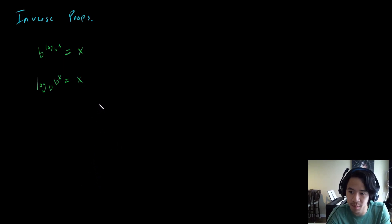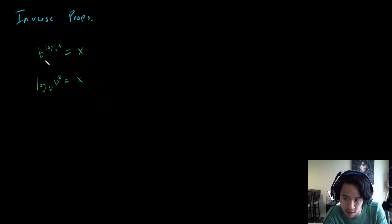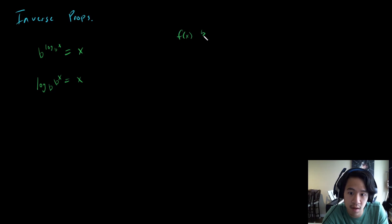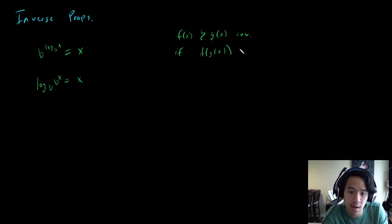If you want to understand why these work and not just memorize them, hang on. Two functions are inverses if f of g of x equals x, and g of f of x equals x.